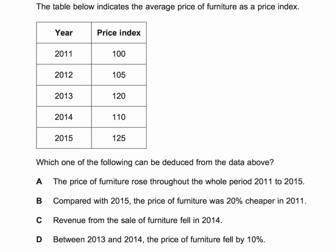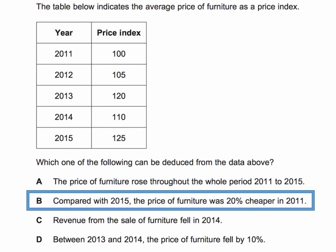What did you get for this — A, B, C, or D? My answer is B: compared with 2015, the price of furniture was 20% cheaper in 2011.